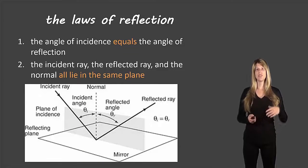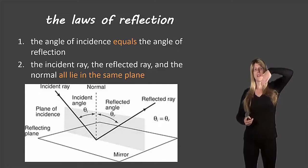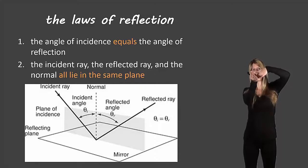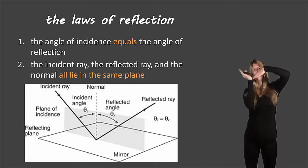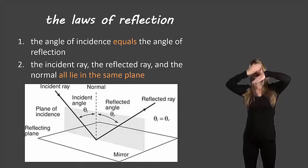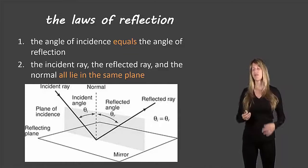The second law is that the incident ray, the reflected ray, and the normal all lie in the same plane. So if the incident ray is coming in at an angle like this, the reflected ray will come out at the same angle. It's not going to shoot towards you or come back towards me — it's going to be in the same line, almost like you could draw it on a piece of paper.